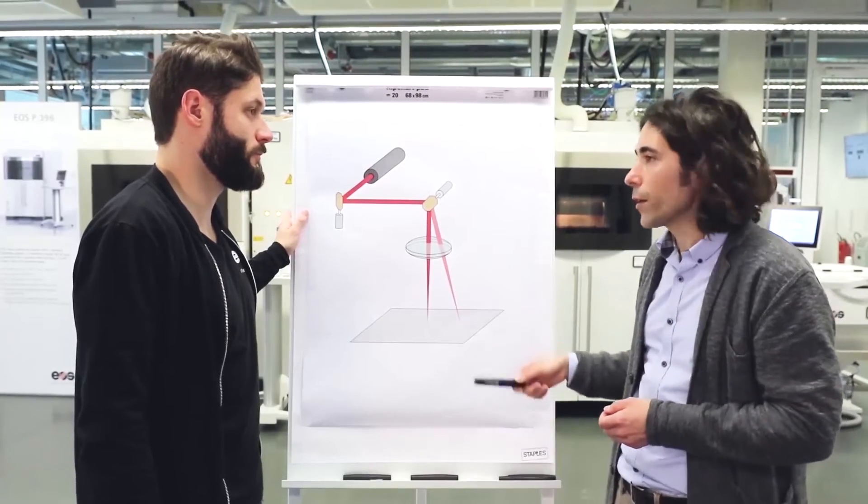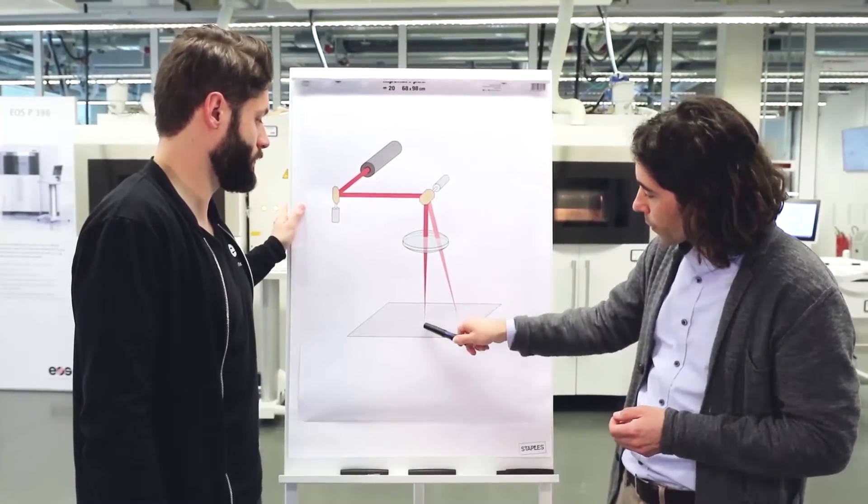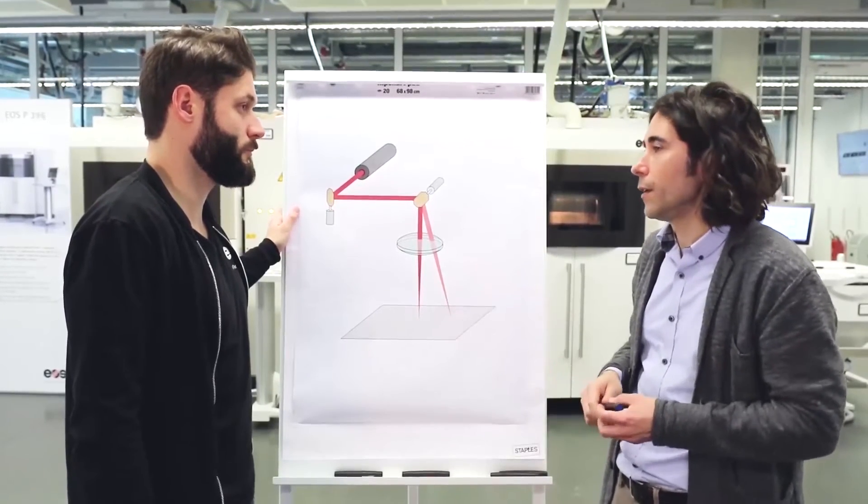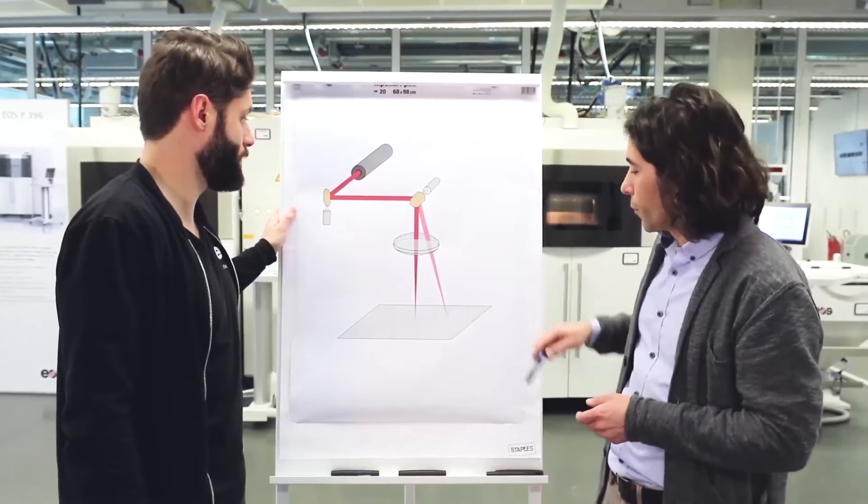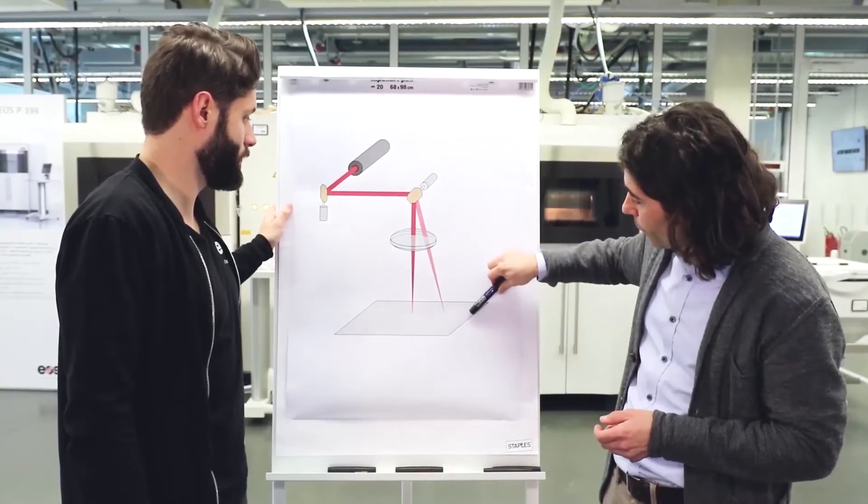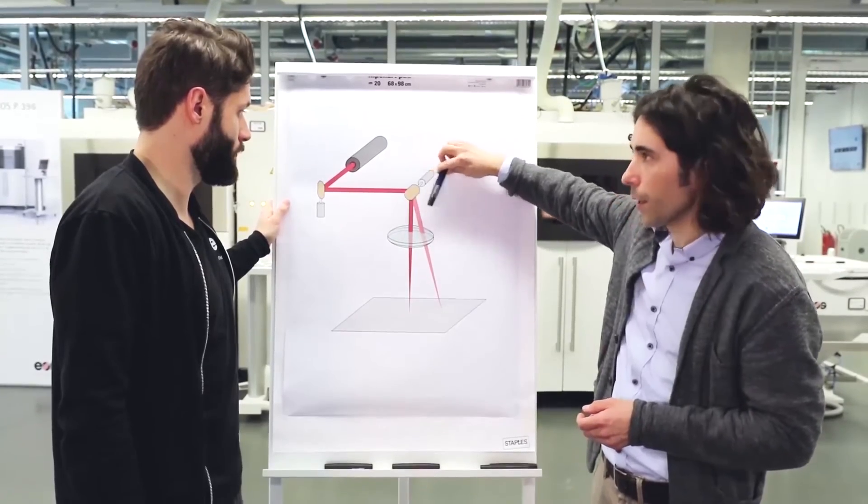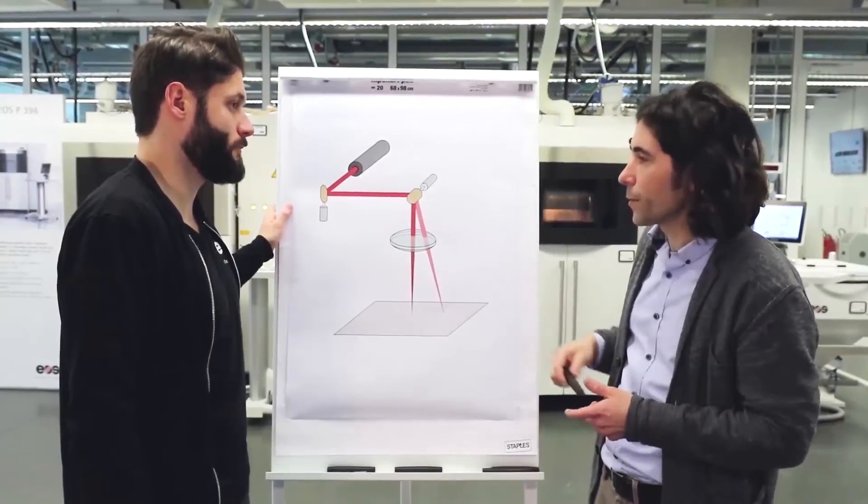And the second function is that it always focuses in a plane. If you take an ordinary lens, you would focus not on a plane but on a spherical surface. So you would defocus if you increase the angle of deflection. Yes, the F-theta lens prevents that.